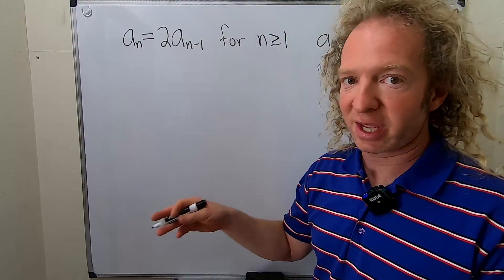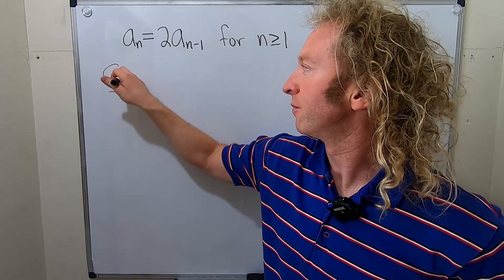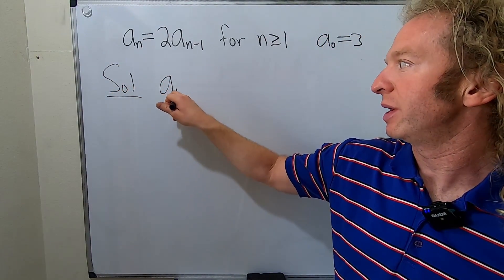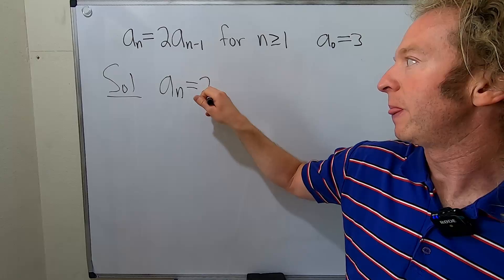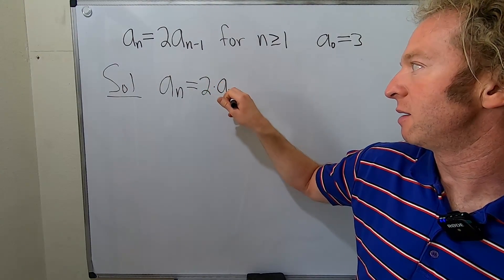Let's carefully go through this and solve it. Solution. So we start by writing down our equation: a_n equals 2 times a_{n-1}.